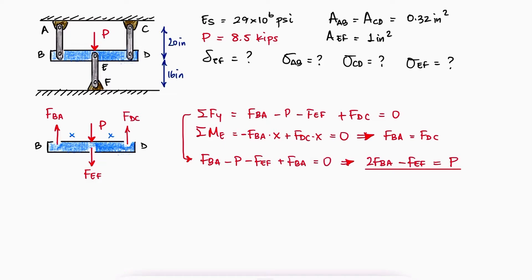Since BED is not deflecting or deforming in any form, we know that the deflection of AB or CD is equal to the deflection of EF.